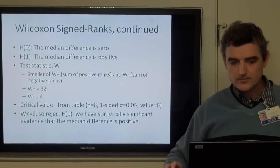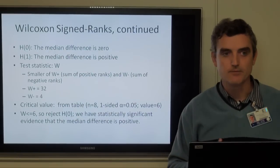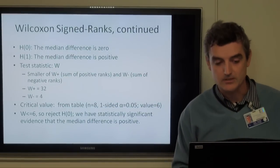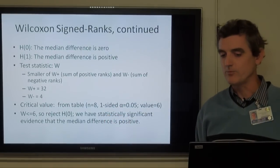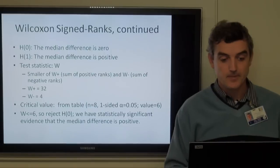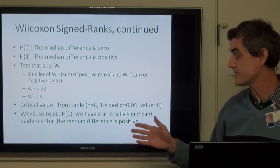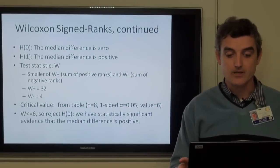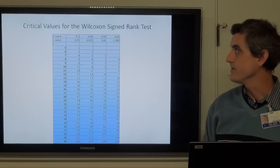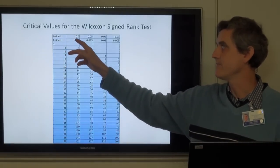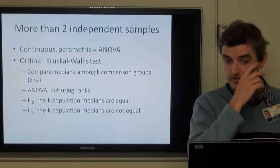We put the sign on each rank — if negative the signed rank is negative, if positive it's positive — then add them all up. The null hypothesis is that the median difference is zero; the alternative is that the median difference is positive. The test statistic W is the smaller of either the sum of positive ranks (W+ = 32) or the sum of negative ranks (W- = 4, from ranks 1 and 3). From the Wilcoxon signed rank table, for n = 8 and one-sided alpha of 0.05, the critical value is 6. Our W- of 4 is less than 6, so we reject the null hypothesis — there is significant evidence that the median difference is positive.